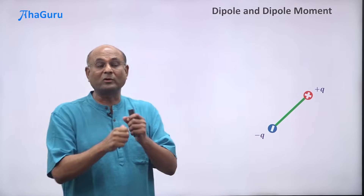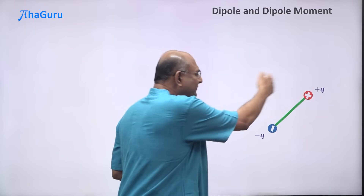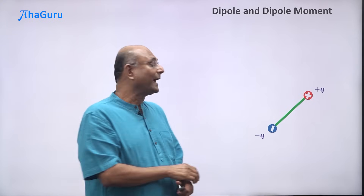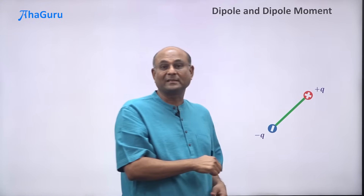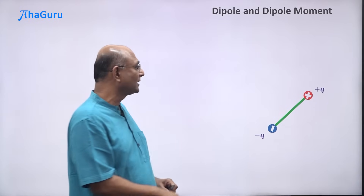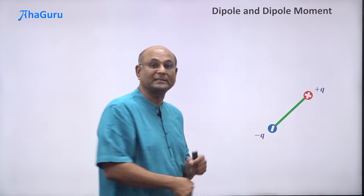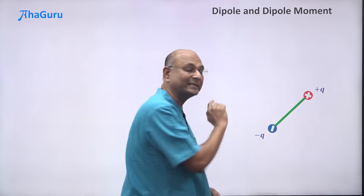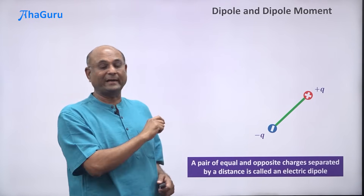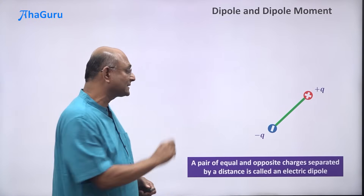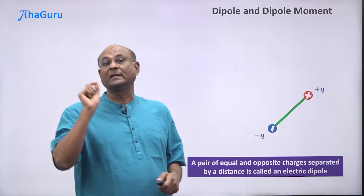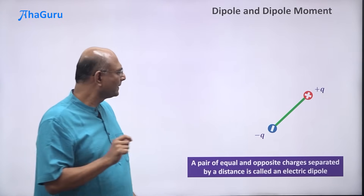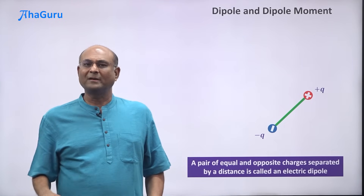This is an artificially constructed object. In reality, we are going to have a lot of these kinds of objects where electrical forces will try to make the two charges come close to each other, but some other force keeps them apart. A pair of equal and opposite charges separated by a distance is called an electric dipole.